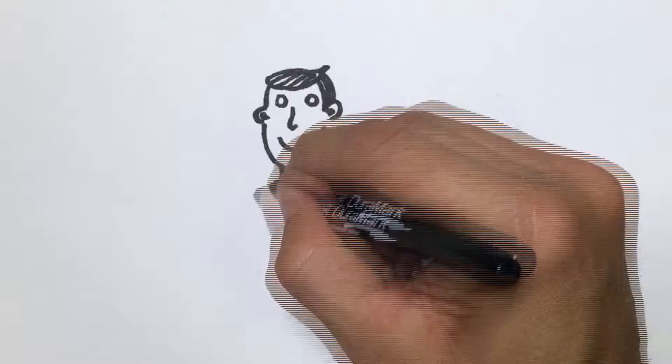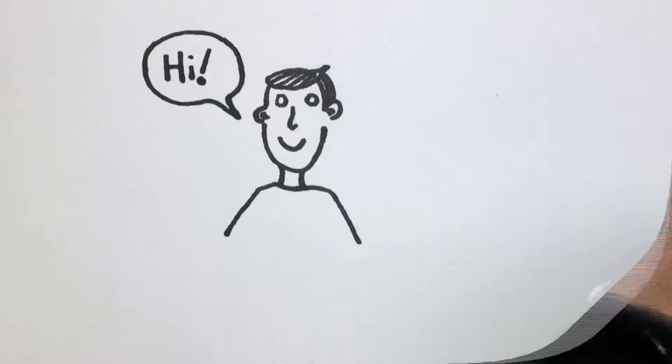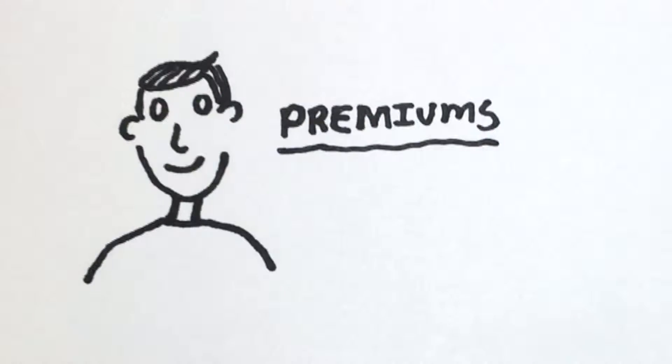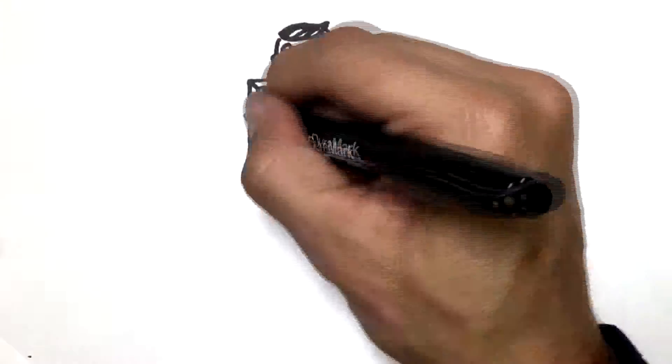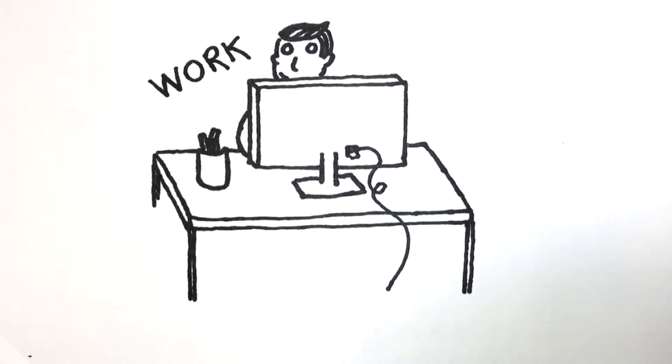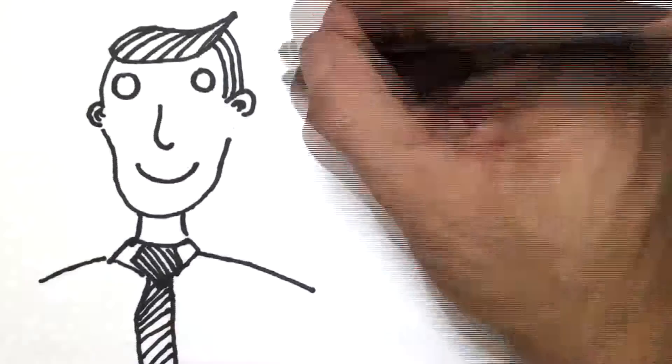Say hi to Fred, because he's about to help. Hi, Fred. Hi. Let's start with premiums. That's what Fred pays every month to have health insurance. Fred, like half of all Americans, gets his insurance from work, so the cost of his premium comes out of his paycheck.